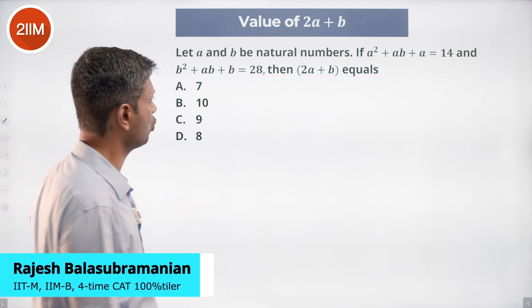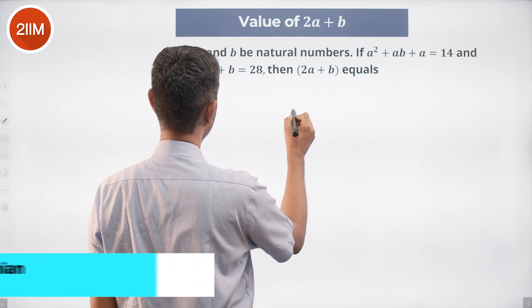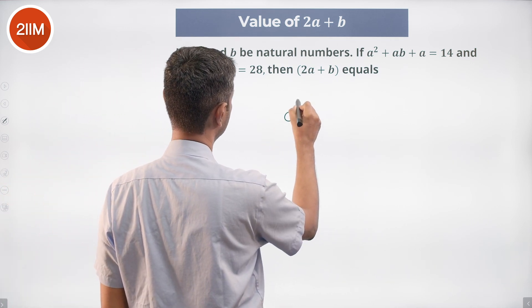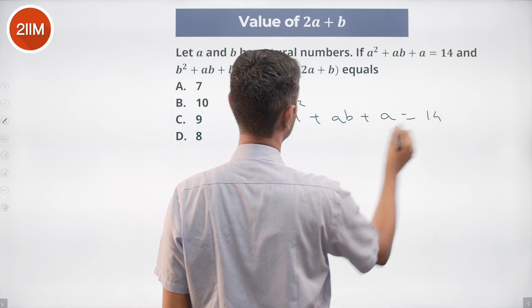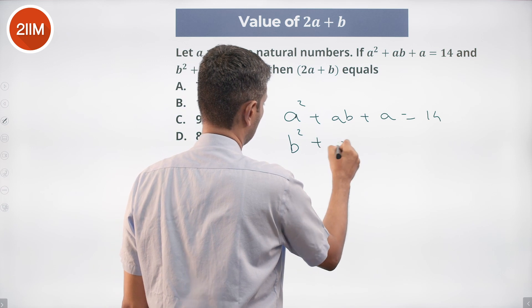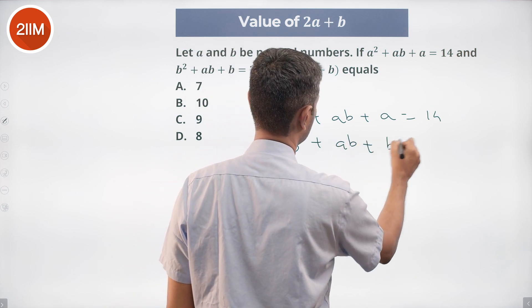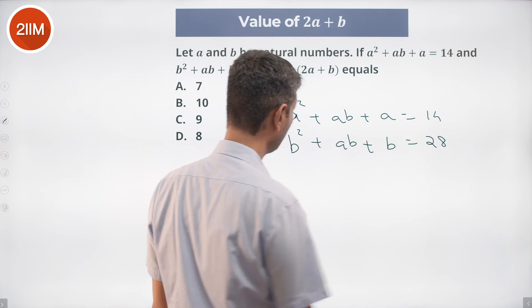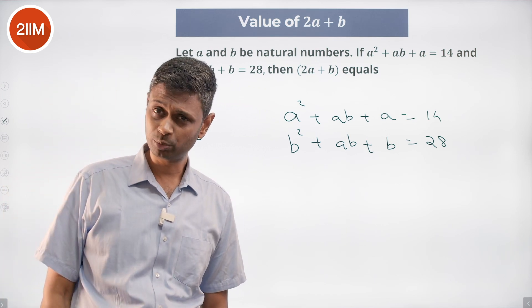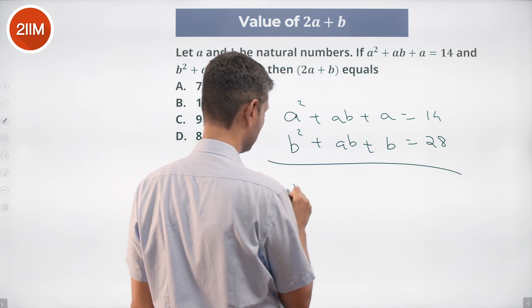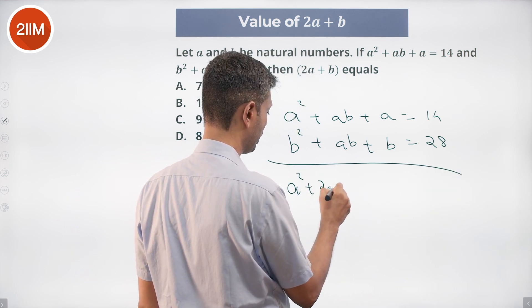a squared plus ab plus a is 14, b squared plus ab plus b is 28. These questions are painful. The only thing giving me sanity here is a and b being natural numbers. It's very nice, beautiful to get. What do we do? We add both of these.